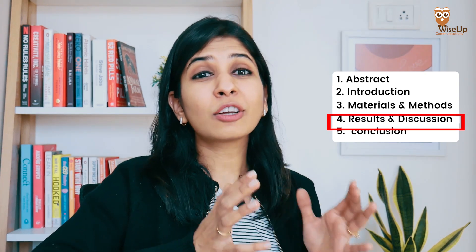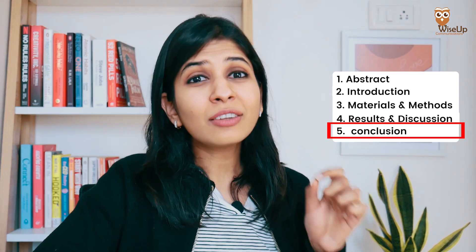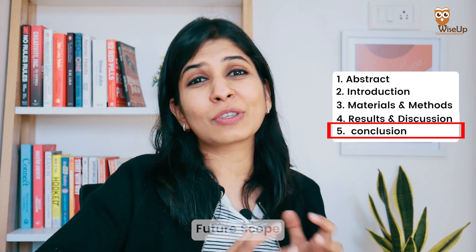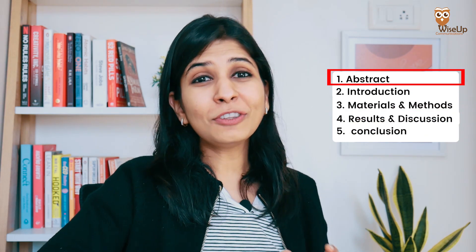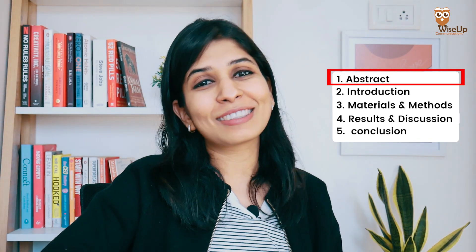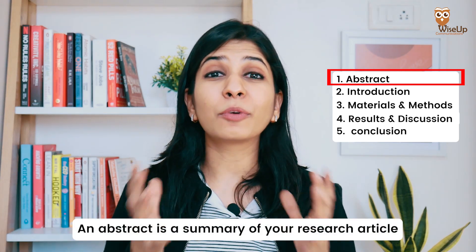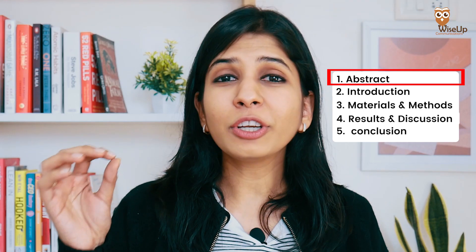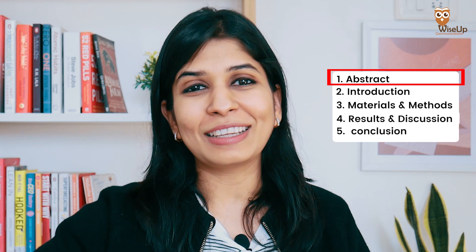Finally comes the conclusion section, where you reiterate the importance of your work, share the key results again, and then share the scope for future work and how your research can be taken forward. After that comes the abstract, and even though it appears at the top of the research paper, it should be the last section you write — because an abstract is a summary of your research article, and once you've written all other sections, you already know the key elements and writing the abstract becomes very easy.